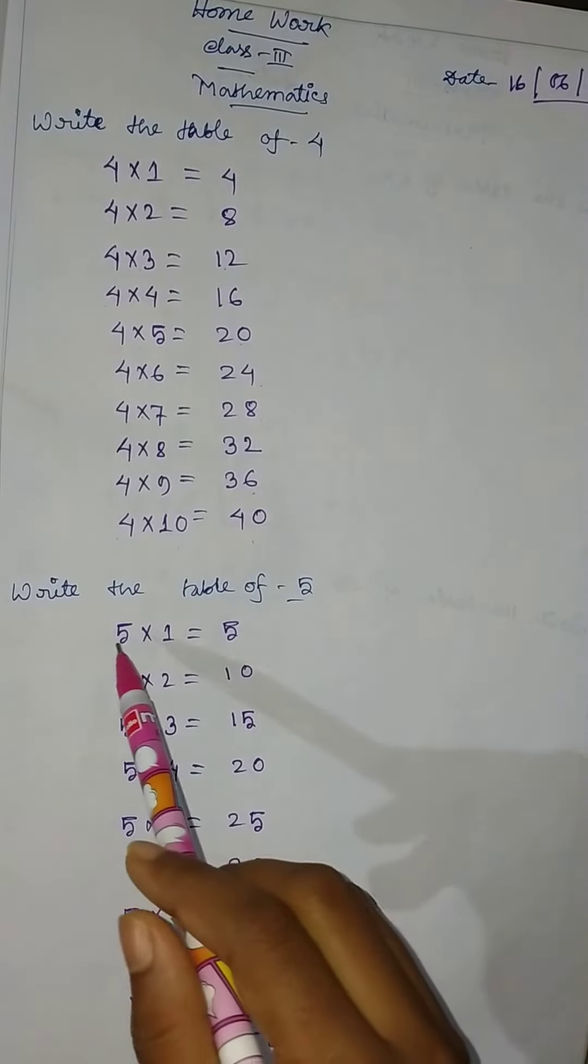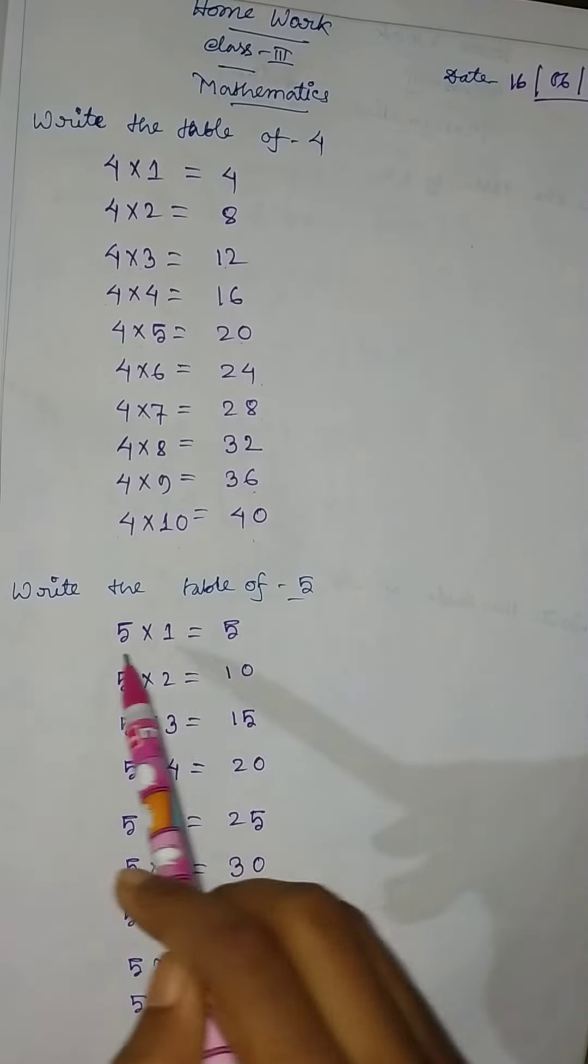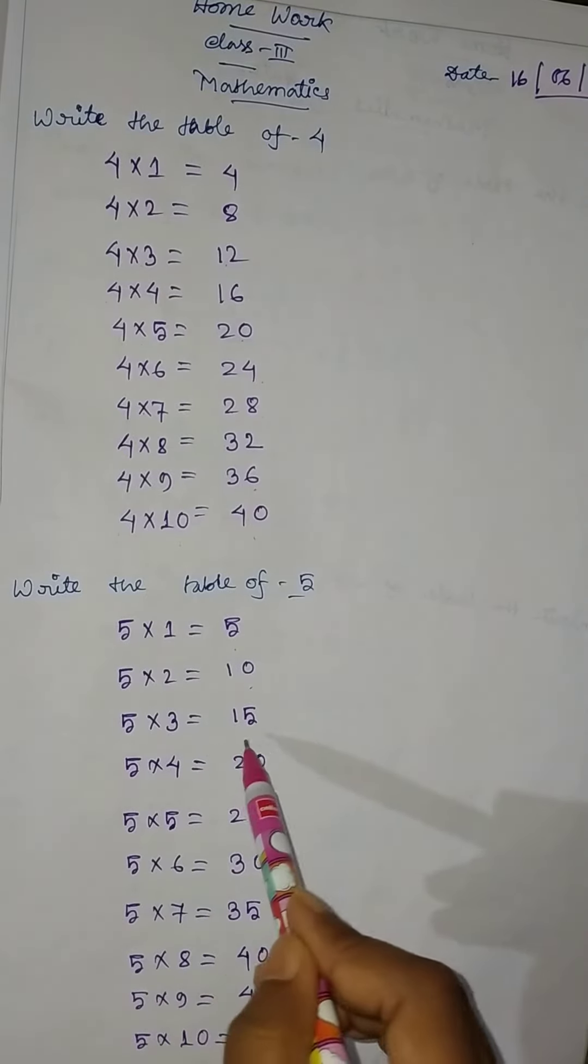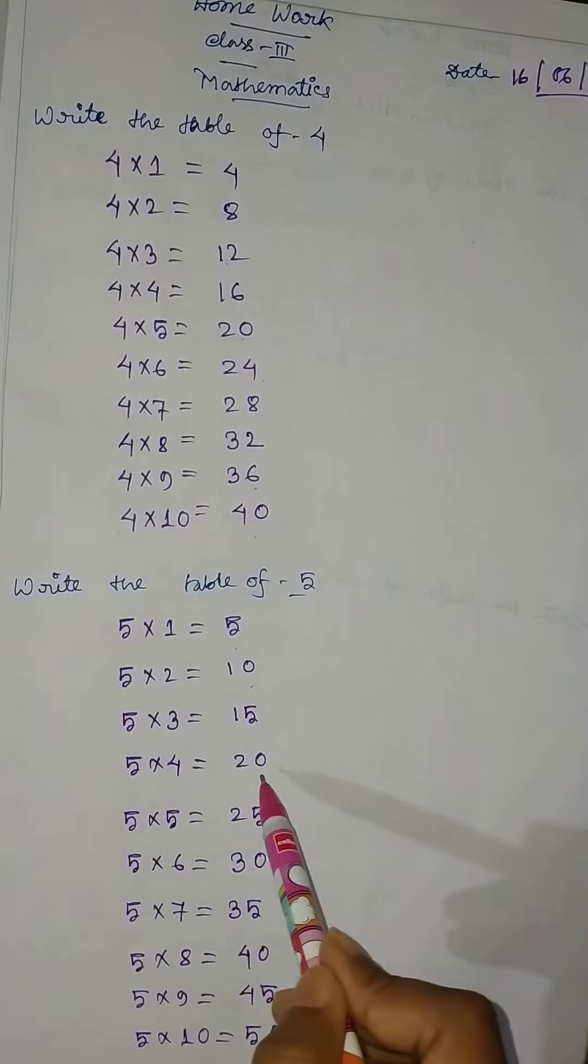Then the table of 5. 5 into 1 equal to 5, 5 into 2 equal to 10, 5 into 3 equal to 15, 5 into 4 equal to 20.